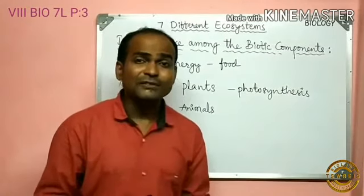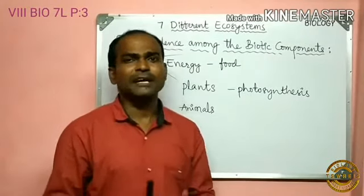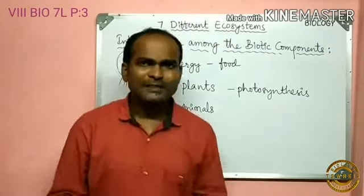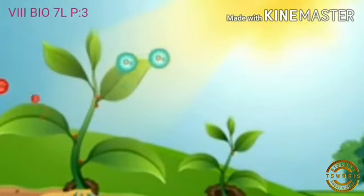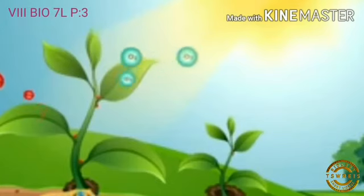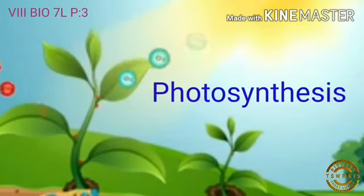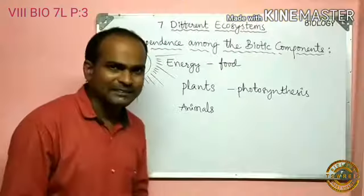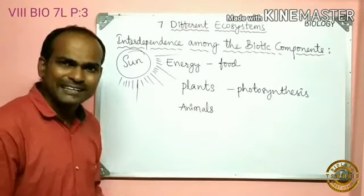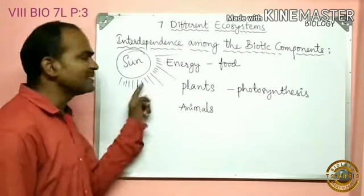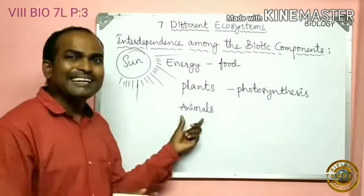All organisms derive energy from food material to live. The sun is the main source of energy for all living organisms on the earth. Plants trap this energy and prepare their food material through the process of photosynthesis. Animals, however, do not get this energy directly from the sun.